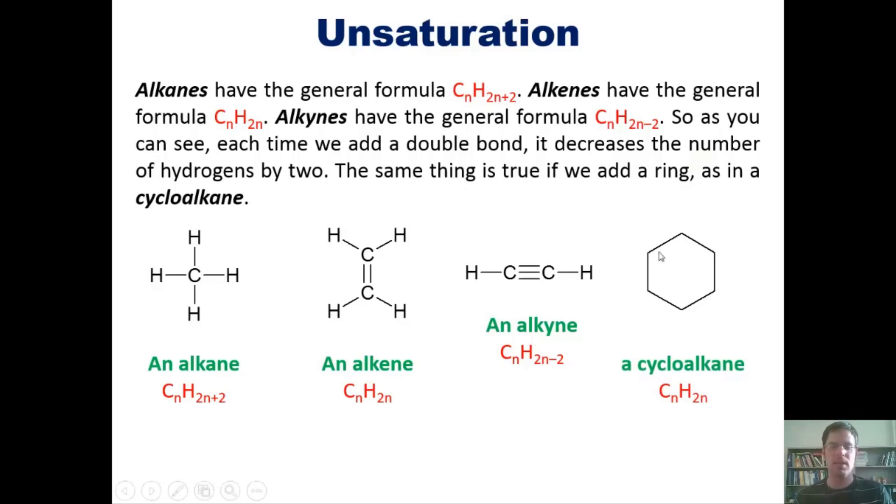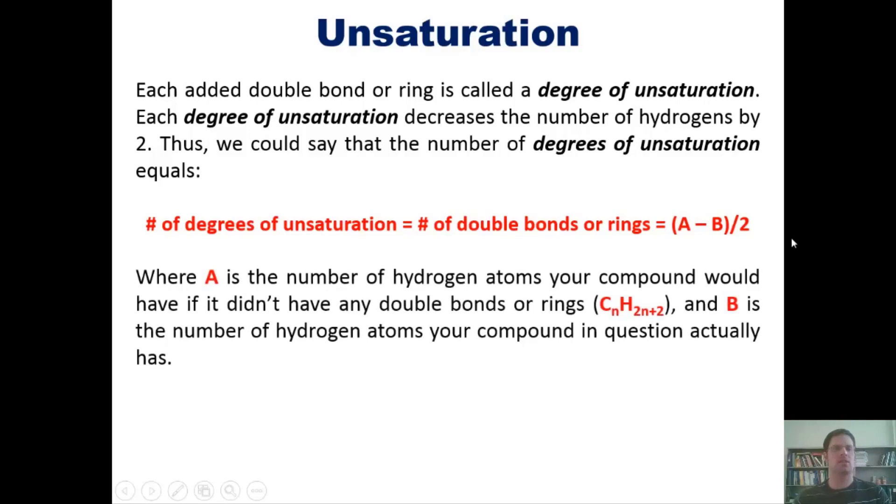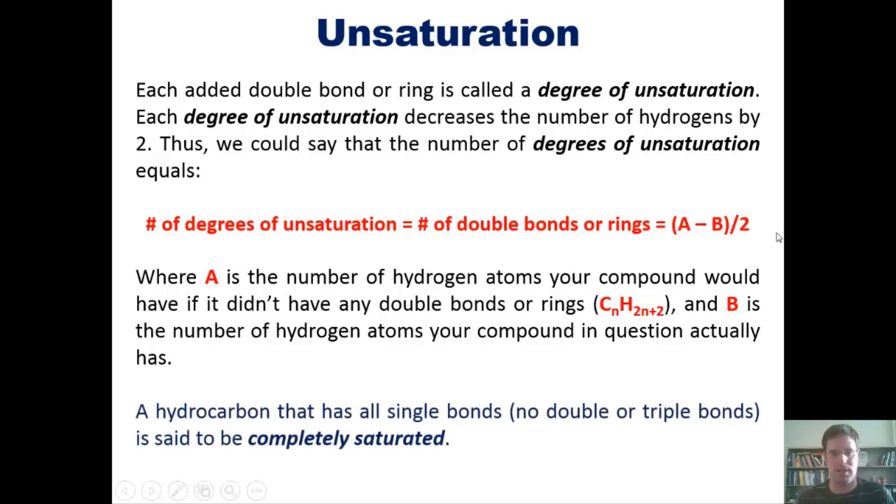The same thing turns out to be true if you add a ring, as in a cycloalkane. Each time we add a double bond or a ring, we call it a degree of unsaturation. Each degree of unsaturation decreases the number of hydrogens by two. Thus, the number of degrees of unsaturation equals (a minus b) divided by 2, where a is the number of hydrogens if there were no double bonds or rings, and b is the actual number of hydrogens. Any hydrocarbon with all single bonds is said to be completely saturated, as in saturated fats.